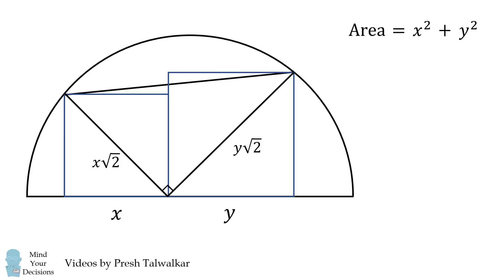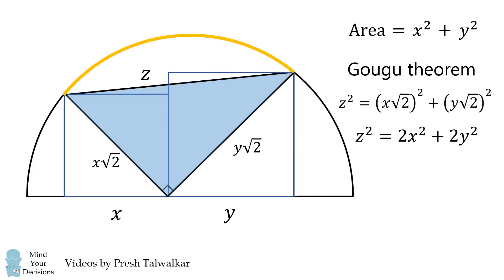Draw a chord connecting these diagonals, and call it z. This is a right triangle, so we can use the Gogu theorem to deduce the length of z squared. This simplifies to be 2x squared plus 2y squared.